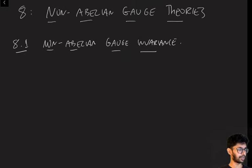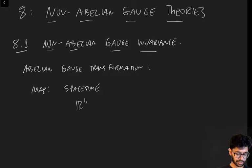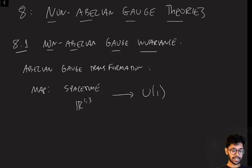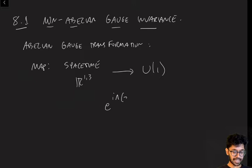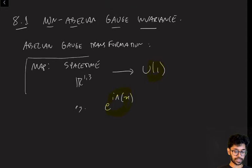Let me first say what we did previously in a more abstract way. We discussed Abelian Gauge Transformations, and those involved the following ingredients. An Abelian Gauge Transformation is a map from space-time — by space-time I really just meant R^{1,3}, just a normal flat Minkowski space — to the group U(1). This was quite explicit in what we were doing, because we always called the Gauge Transformation something like e to the i lambda of x. For every point x in space-time, we have associated some phase, in other words, an element of the group U(1).